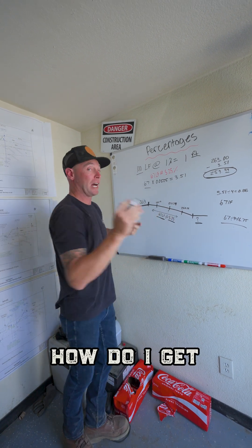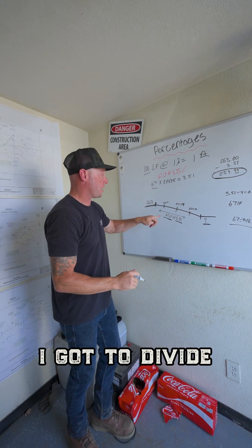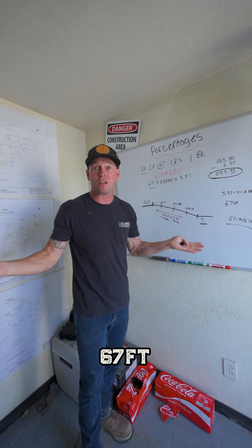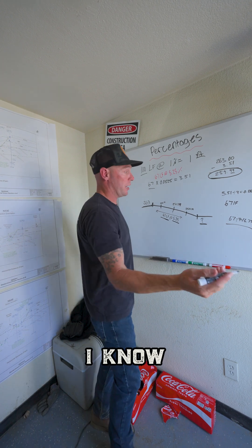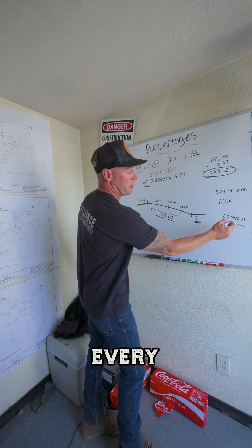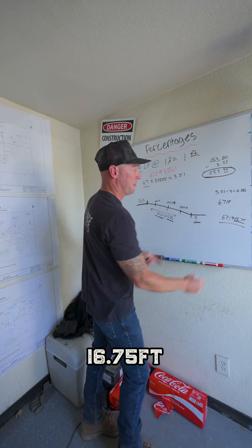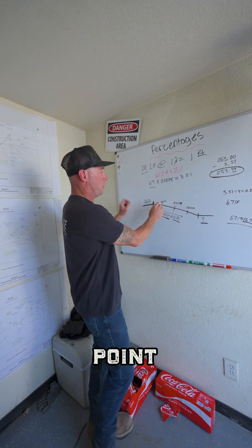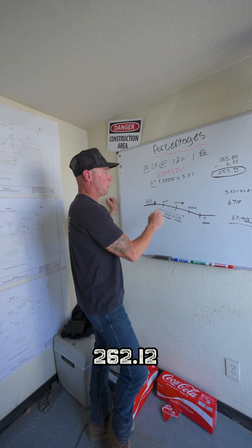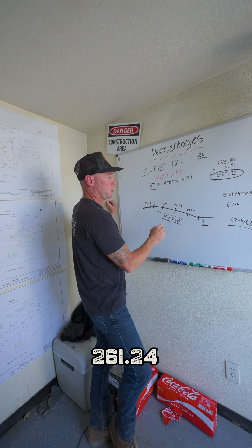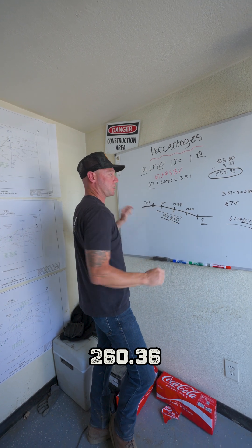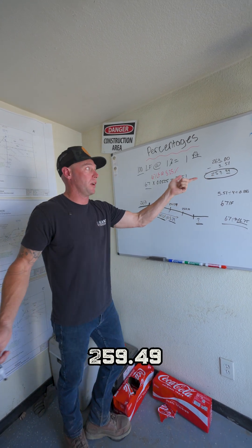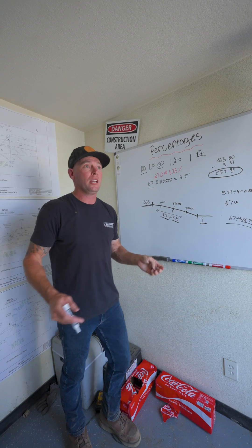That's what these numbers are — how do I get those quarters? I've got to divide out that 67 feet also. So I know that every 16.75 feet you're going to get the next point: 260.12, 261.24, 260.36. Then you'll get to the bottom, which is 259.49.